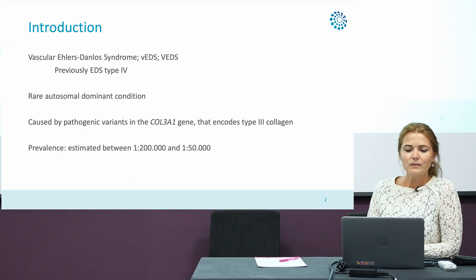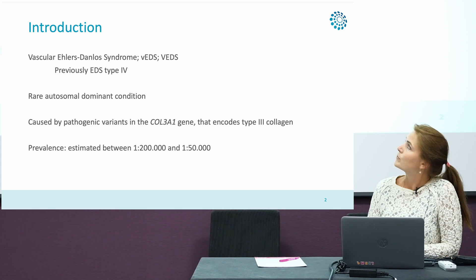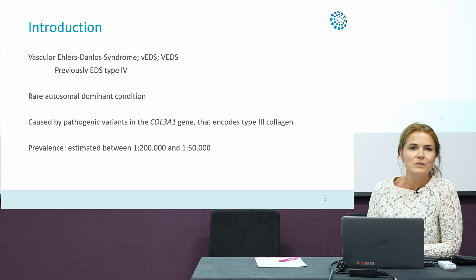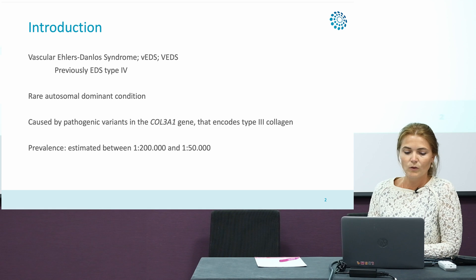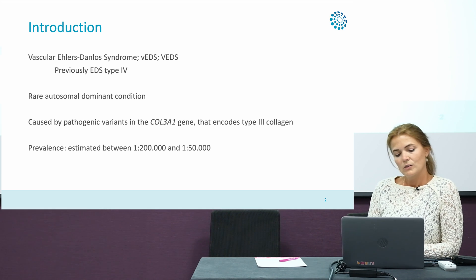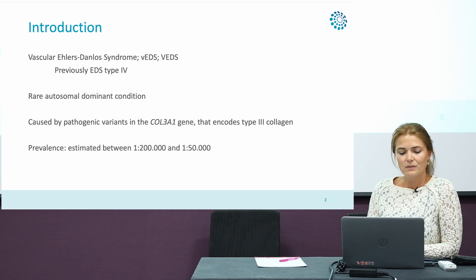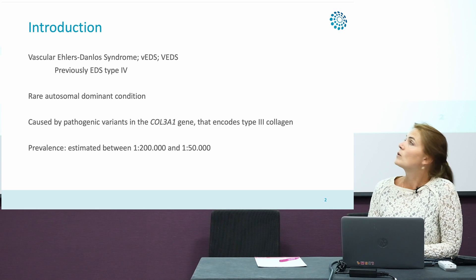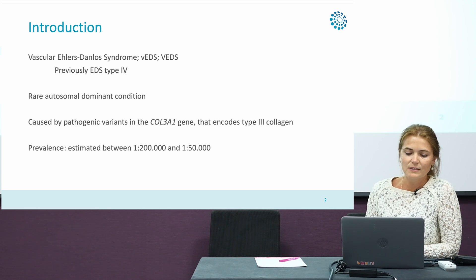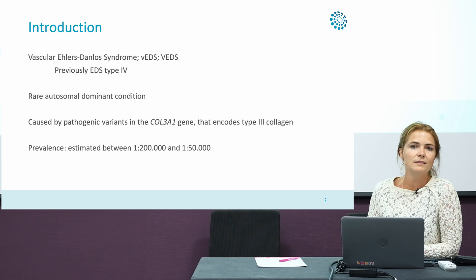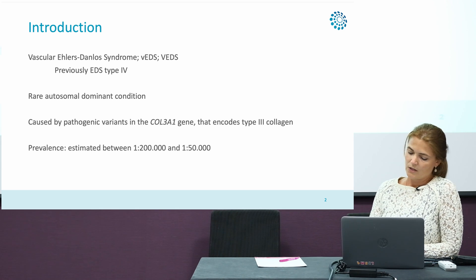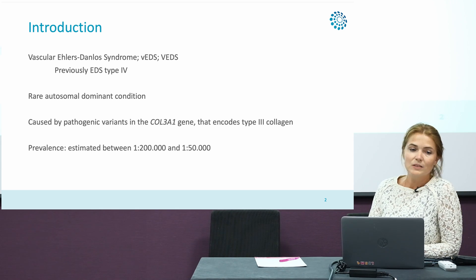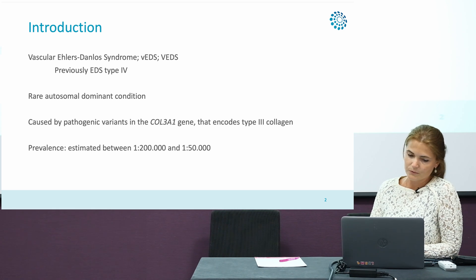Vascular Ehlers-Danlos syndrome, or VEDS, was previously known as EDS type 4, but we don't use that anymore. It's a rare autosomal dominant condition caused by pathogenic variants in the COL3A1 gene, which encodes type 3 collagen. The prevalence is estimated between 1 in 200,000 and 1 in 50,000.